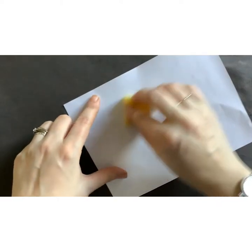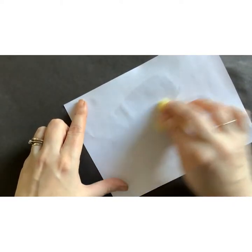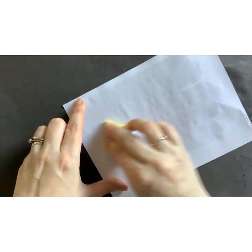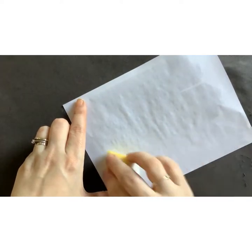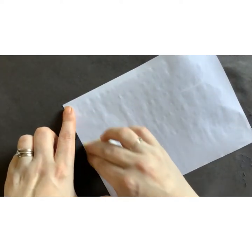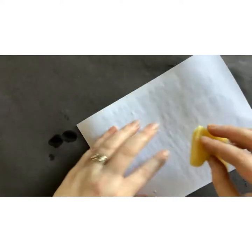You need to get a damp sponge and you're going to gently rub over the back of your image, the paper on the back. You're just going to add a thin layer of water so that the paper becomes damp.